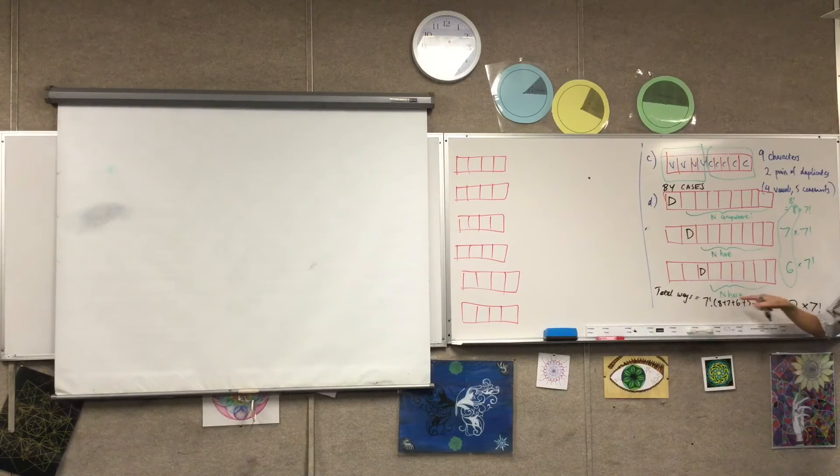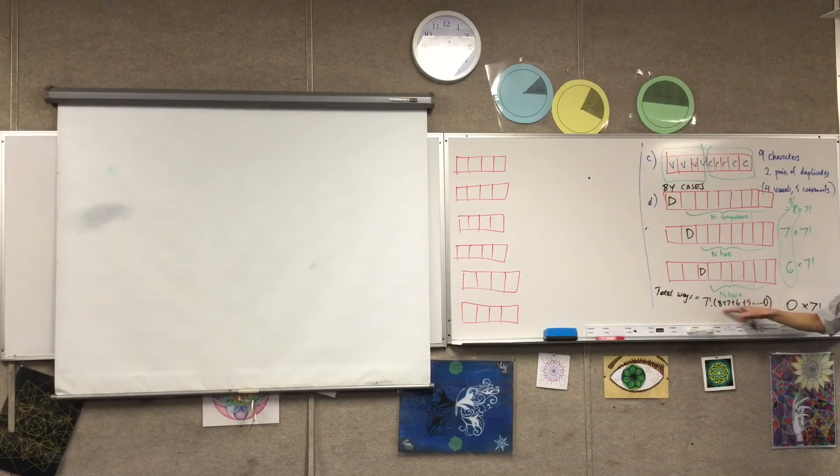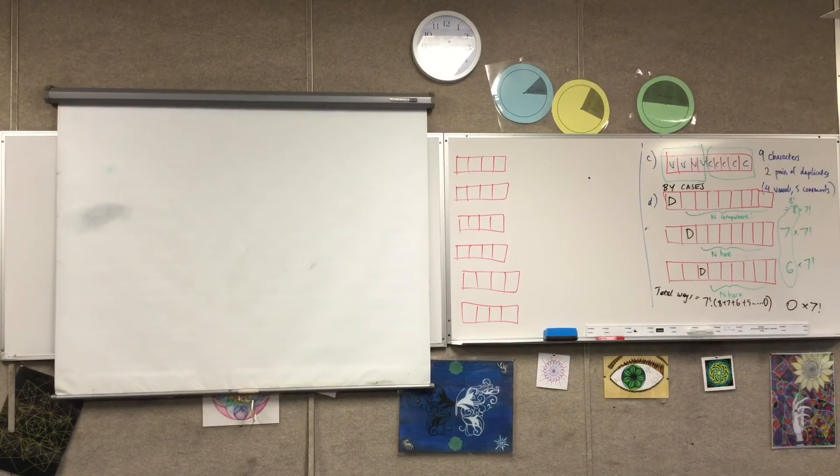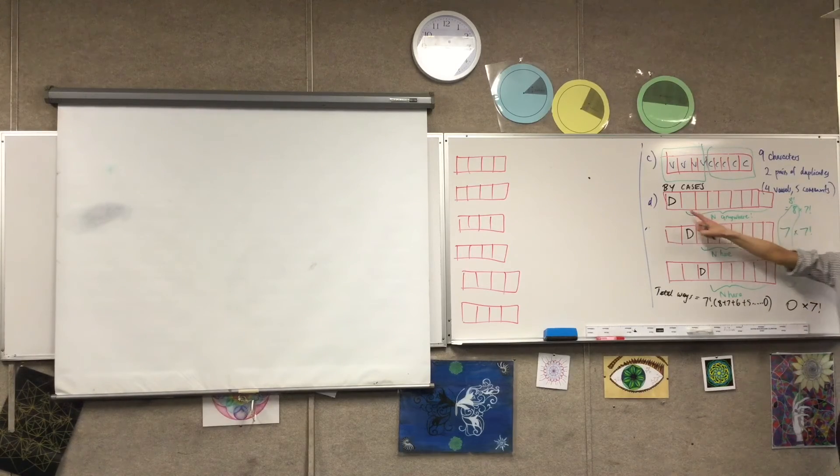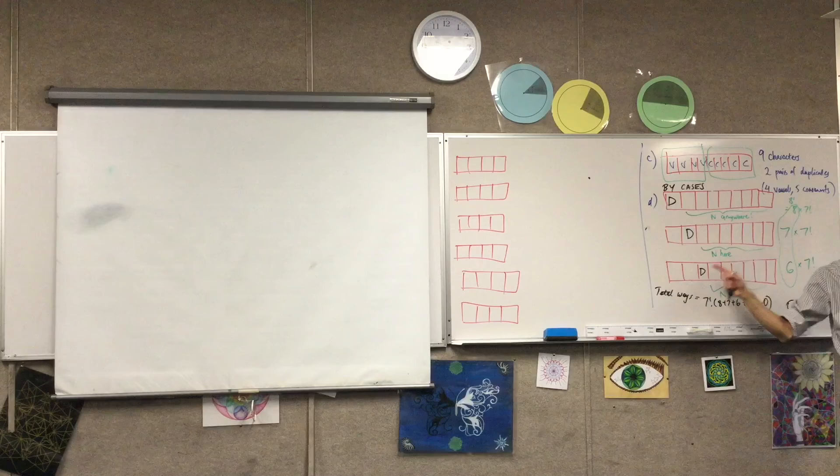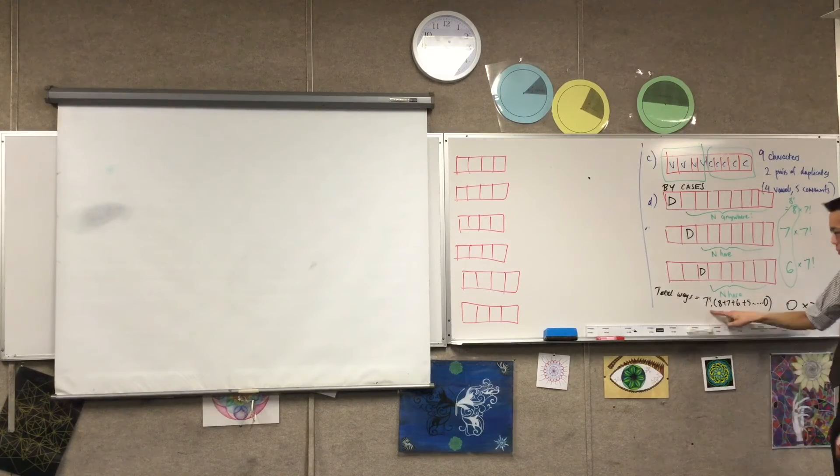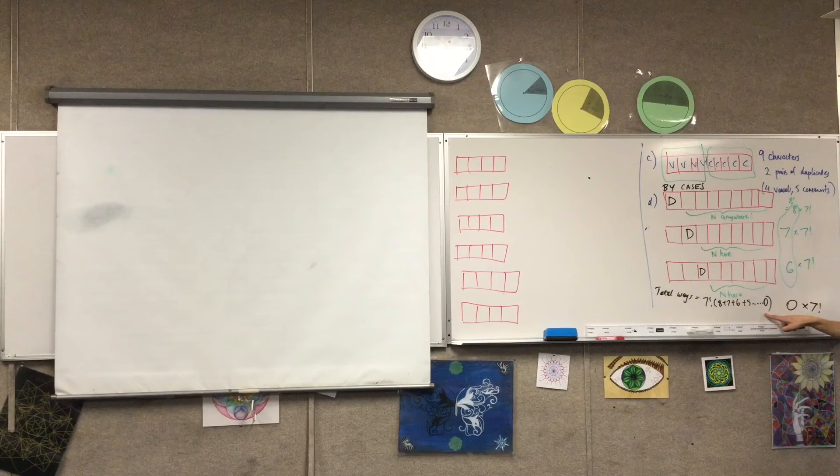Now quick question. Why am I adding and not multiplying these numbers? Yeah, because you can't have these at the same time. The letter D can't be in position one and in position two simultaneously. So I'm adding these, not multiplying. Make sense?